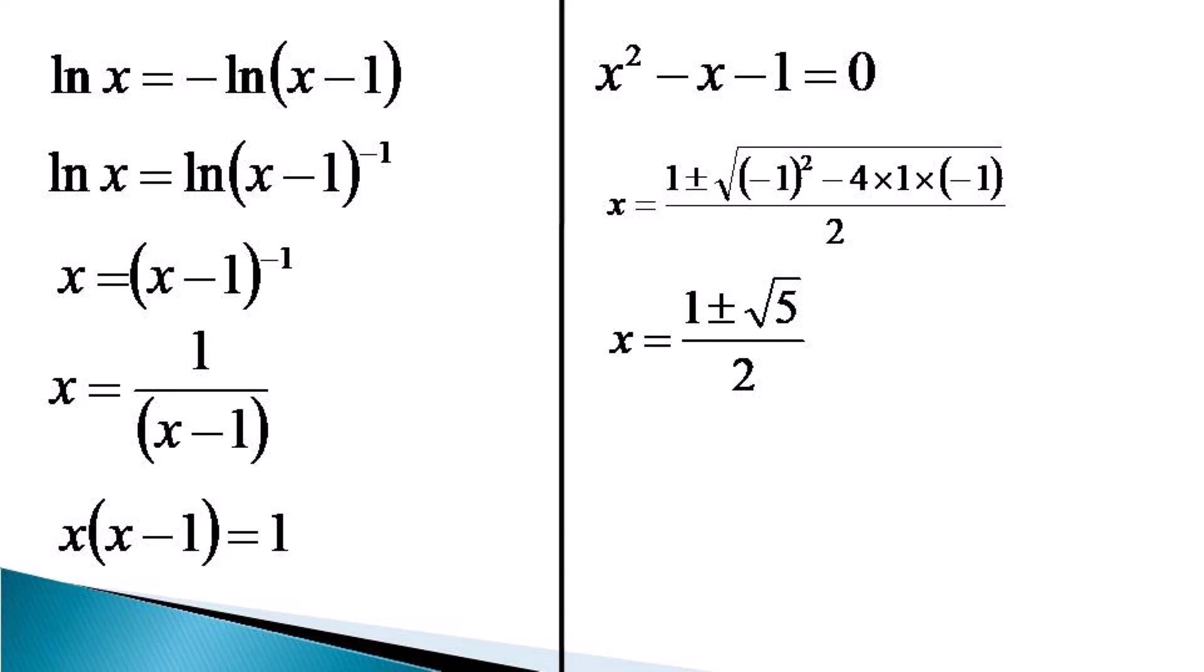When we take the minus sign, (1 - √5)/2, x becomes negative, which is not valid for the original equation. The second root, (1 + √5)/2, is greater than 1 and positive, so this is the other solution.